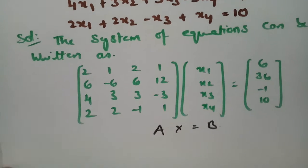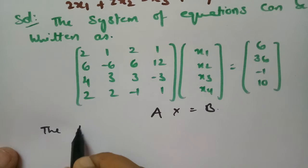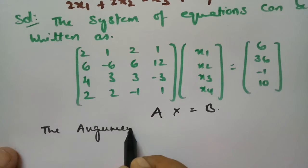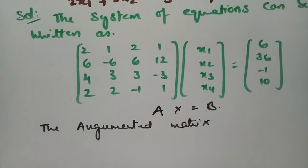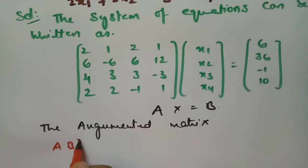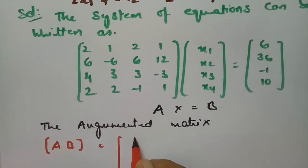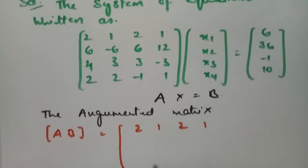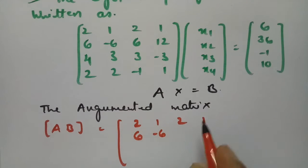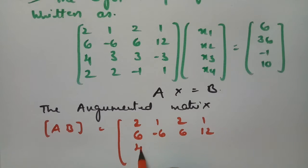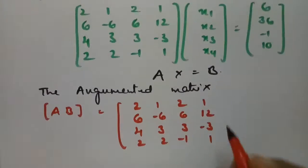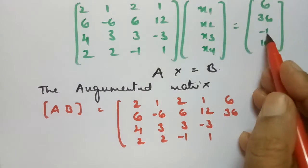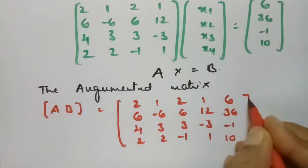Now we have to write the augmented matrix [A|b]. The augmented matrix is: row 1: 2, 1, 2, 1 | 6; row 2: -6, 6, 12, 4 | 36; row 3: 3, -3, 2, 2 | -1; row 4: 2, -1, 1, 10. Wait — the last column appended is 6, 36, -1, 10.